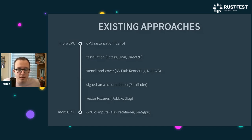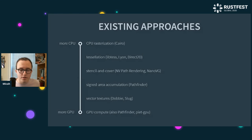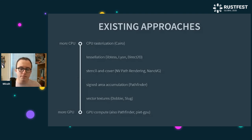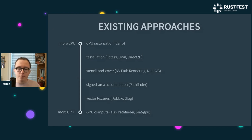Moving further down the spectrum, we get more complicated approaches such as Pathfinder, a Rust library written by Patrick Walton — probably the number one inspiration for Ochre, and I have to give some big acknowledgements to Patrick Walton for that. Pathfinder is kind of a refinement of the stencil and cover approach that does a lot of CPU work to split shapes up so that you only have to do work near the edges rather than in the big opaque centers. So it's really a CPU-GPU hybrid — you're doing work in both places, and it can really outperform CPU rasterizers like Cairo.